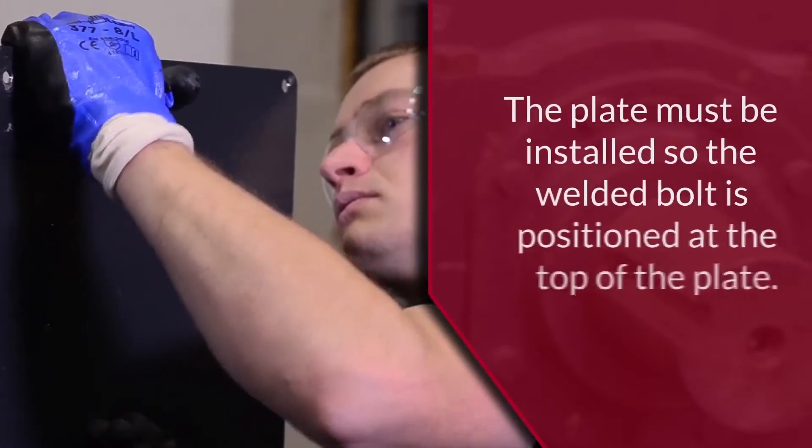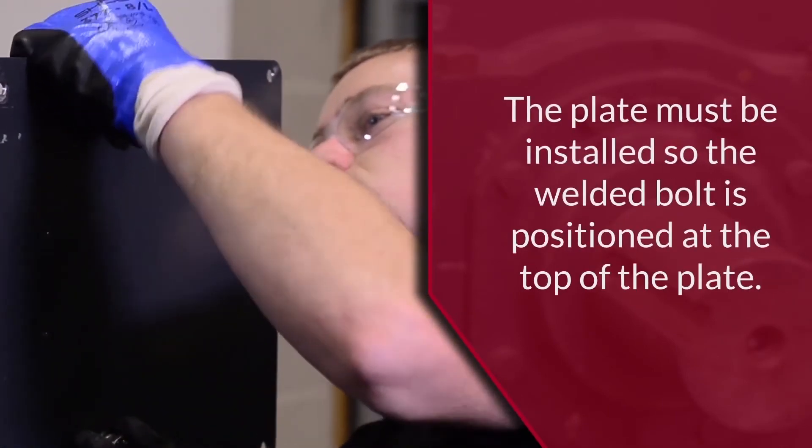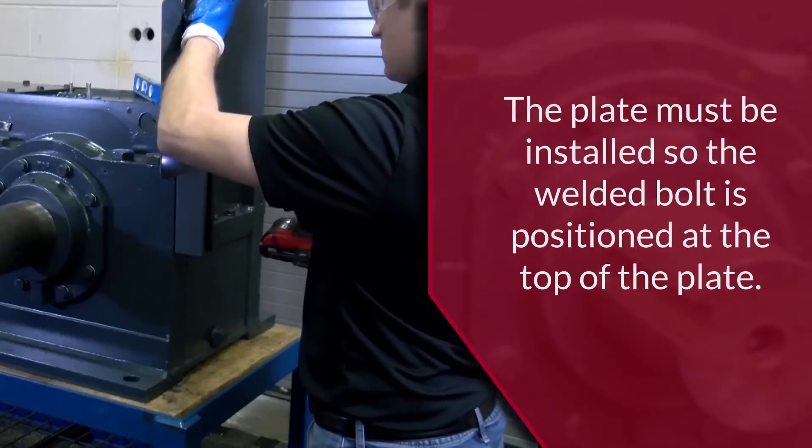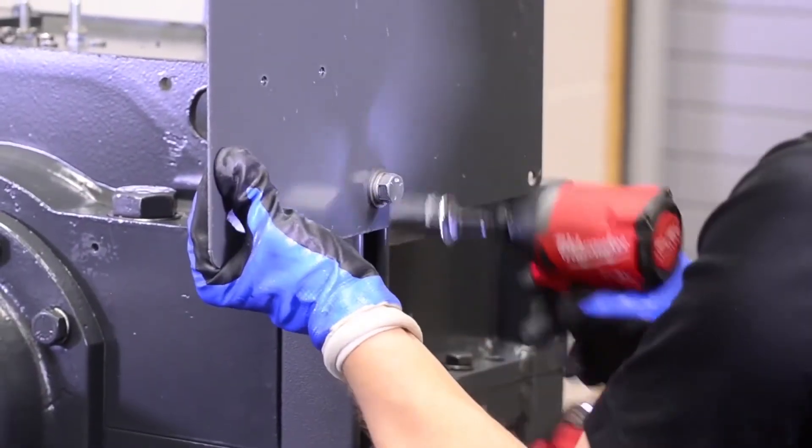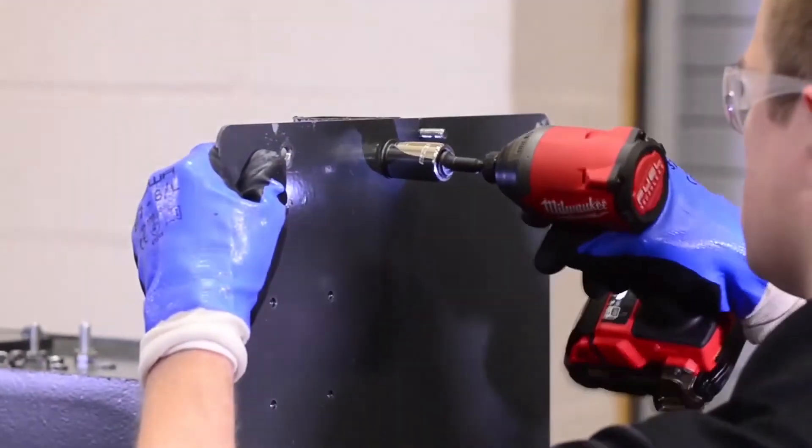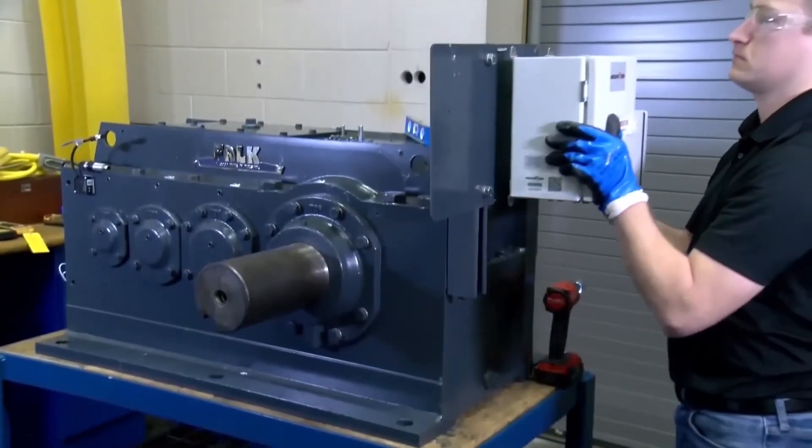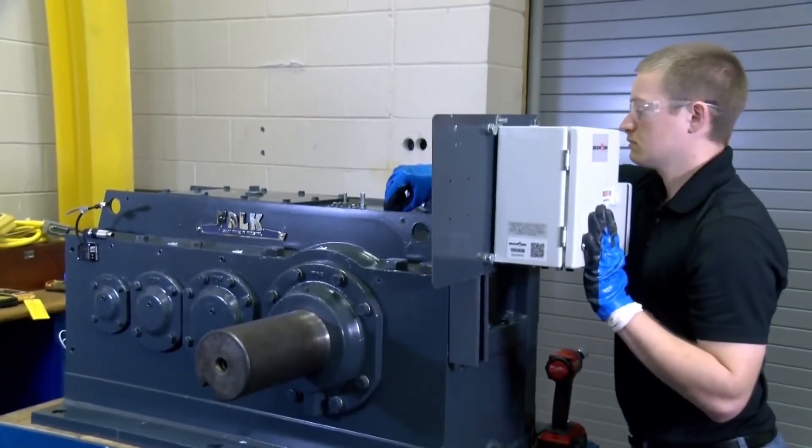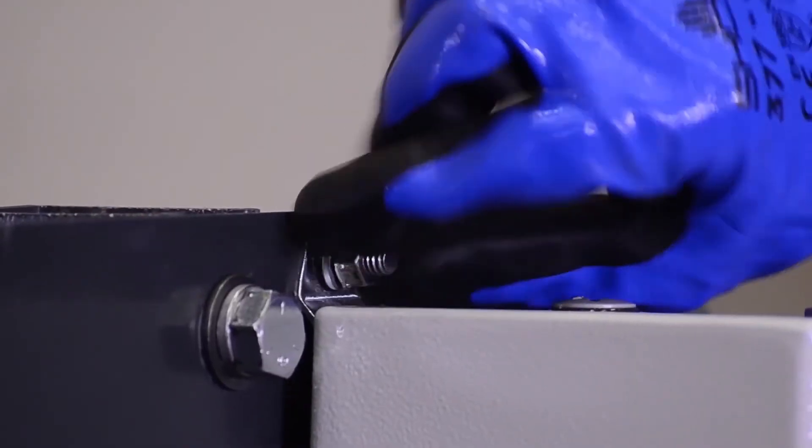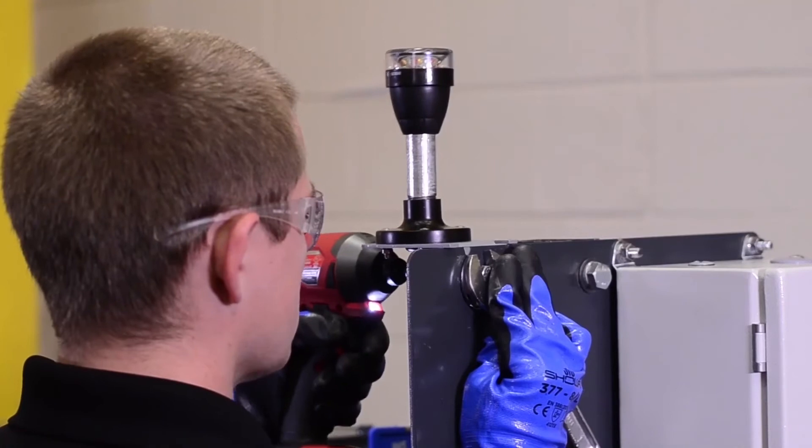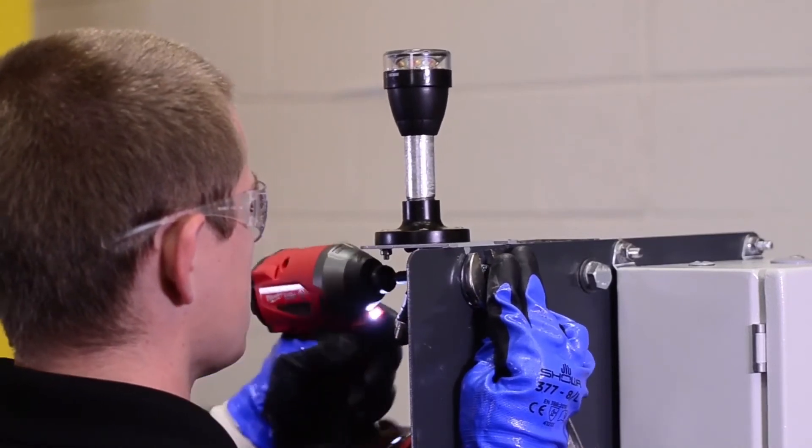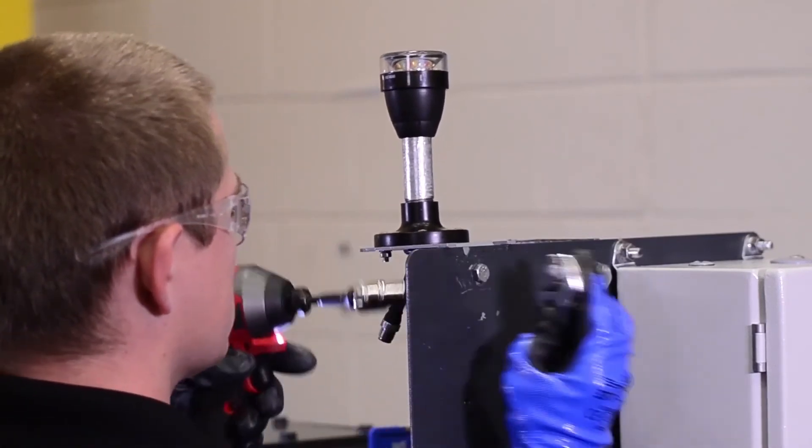Use the channel nuts with half-inch hardware to attach the edge device mounting plate to the unistrut. Secure the edge device to the mounting bracket using the provided 5-16-inch hardware. Attach the andon light assembly using the 5-16-inch bolt and lock nut.